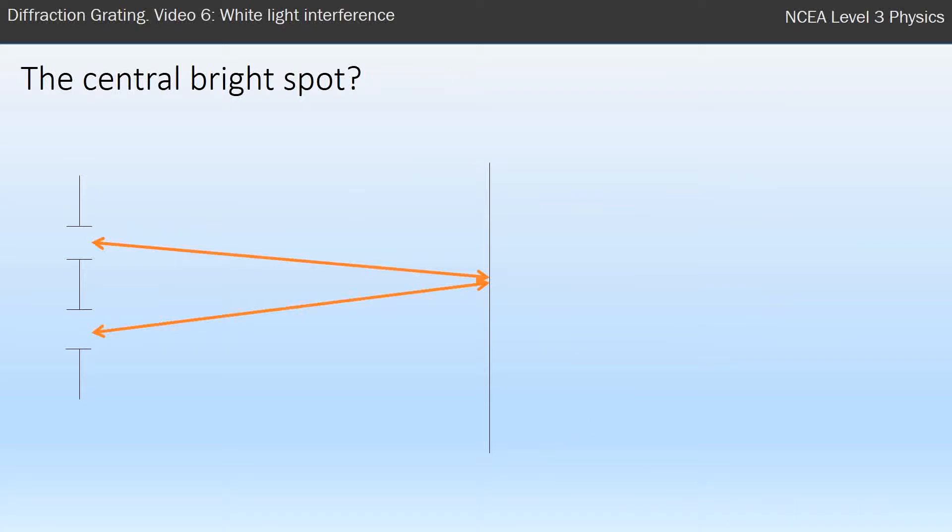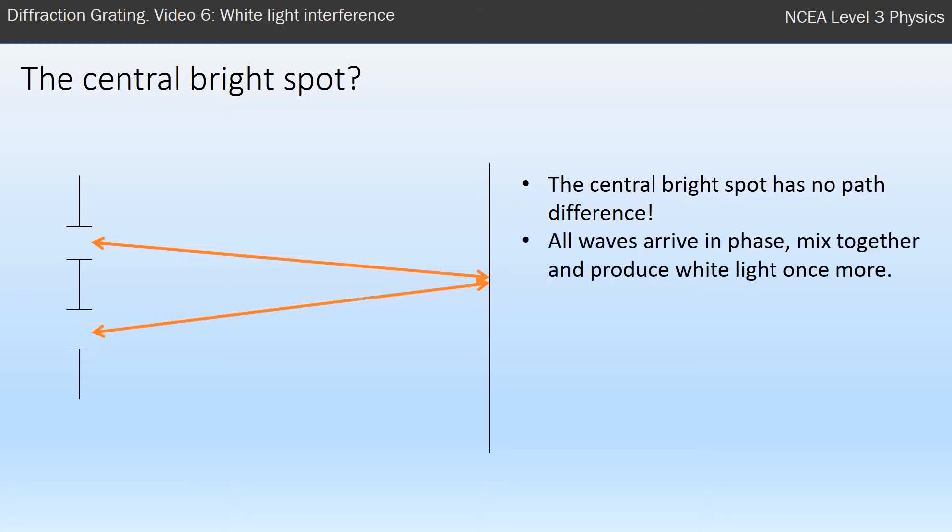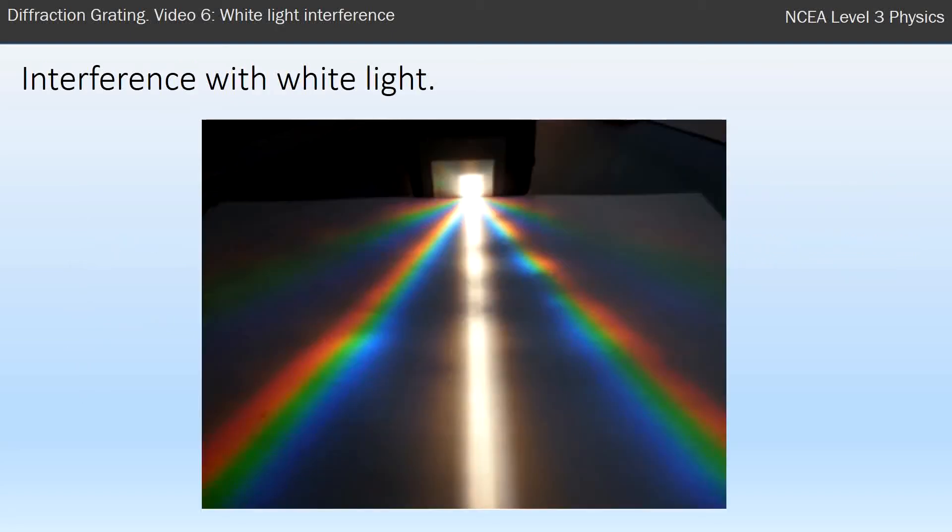What about the central spot though? Why isn't that a rainbow? That's not a rainbow because there is no path difference. It's the same distance from either slit to that center. And because of that, all the waves, no matter what color or frequency or wavelength, they all arrive in phase and they mix together and they produce white light once more.